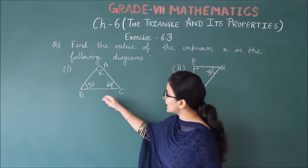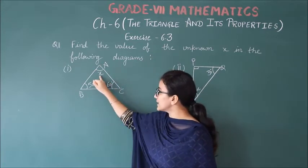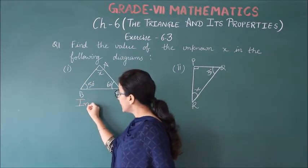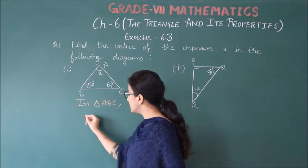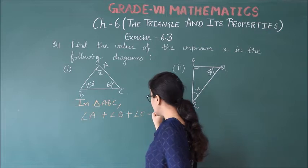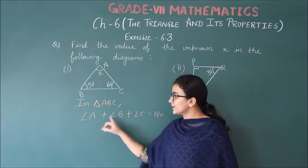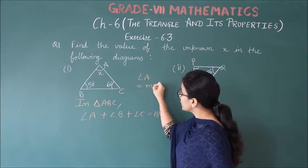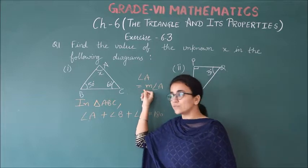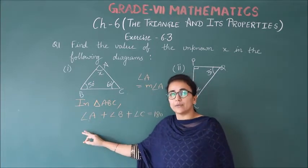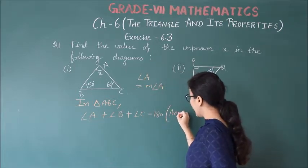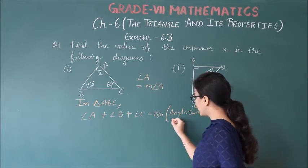We will use the first part. The first part is the triangle is A, B, C. In triangle ABC, angle A plus angle B plus angle C is equal to 180 degrees. Using angle sum property of triangle.